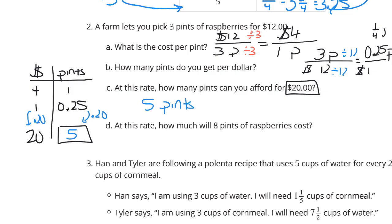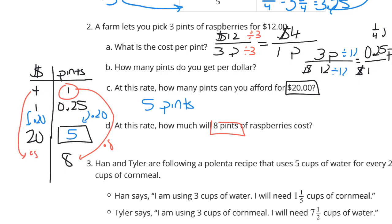At this rate, how much will 8 pints of raspberries cost? We're looking for 8 pints. What makes the most sense — using our 0.25 pint rate, or our 1 pint rate? Since we're given pints, we use the 1 pint unit rate, multiply by 8, and take our $4 times 8 to get $32. So 8 pints is going to cost $32.